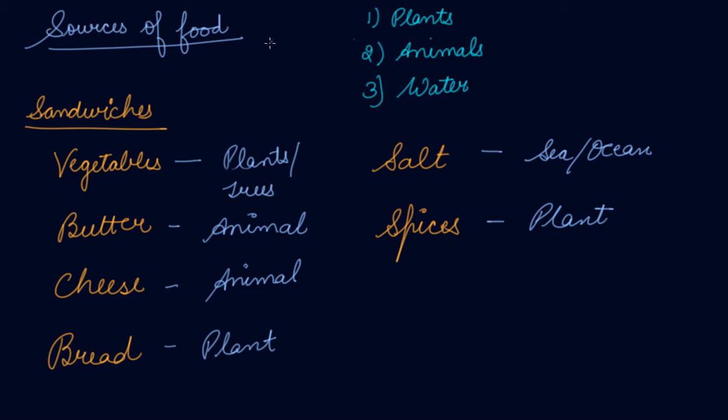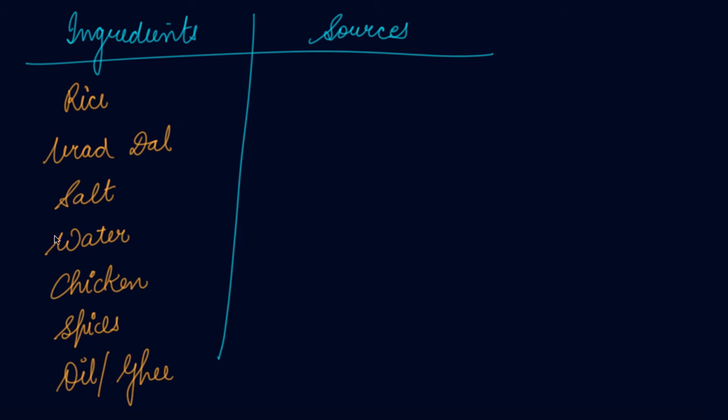So these are your main sources of food. We count plants and animals as the main sources of food because food is given by plants and animals. Now, these are some of the ingredients - let's see the sources.